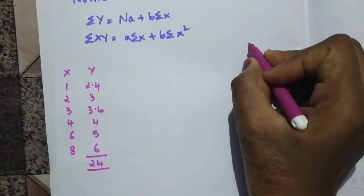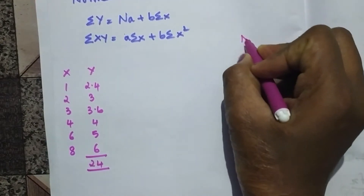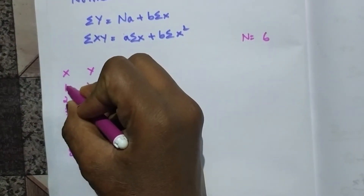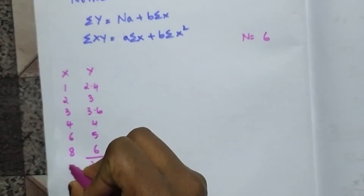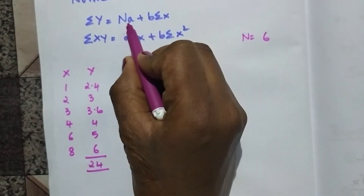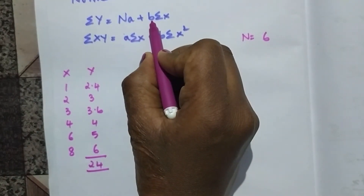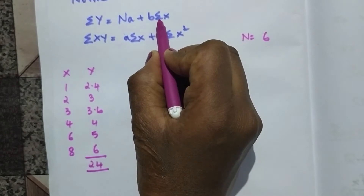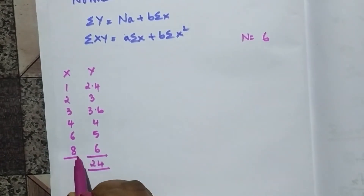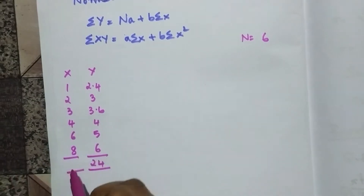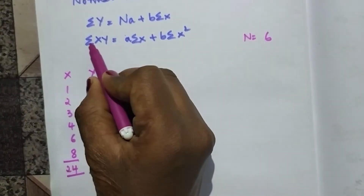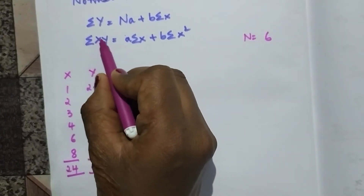Now n is nothing but the total number of values in the column, so n = 6 — we have 1, 2, 3, 4, 5, and 6. We also need to find summation x, which is the total of the x values. After totaling I get summation x = 24.